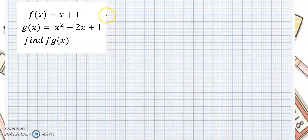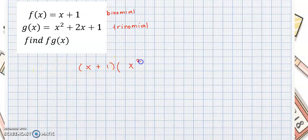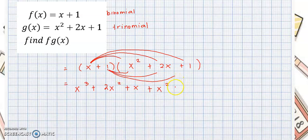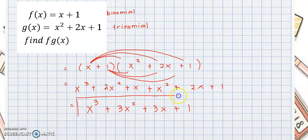For the last example, we are multiplying a binomial by a trinomial. So f of x is x plus 1, multiplied by x squared plus 2x plus 1. First, distribute x across the three terms: x cubed plus 2x squared plus x. Then distribute 1: plus x squared plus 2x plus 1. Combining similar terms: x cubed plus 3x squared plus 3x plus 1. So this is the answer.